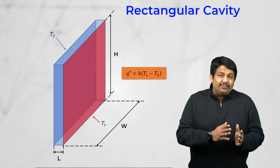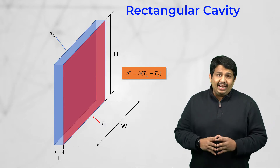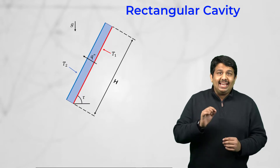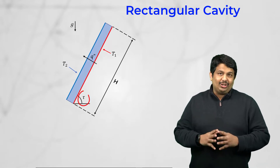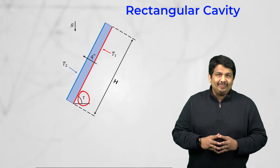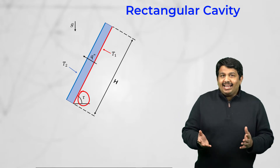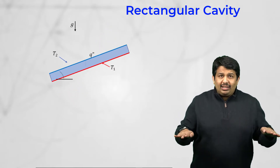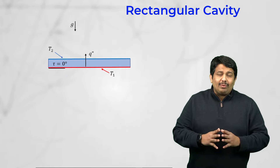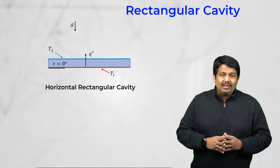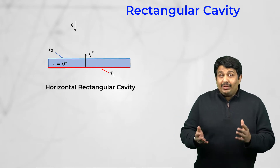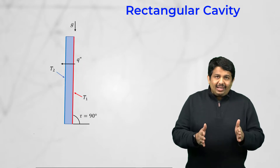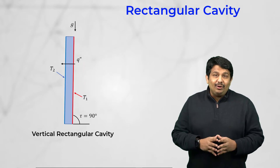When the cavity is viewed from the side, the height of the cavity H is at a tilt angle with the horizontal plane. When this tilt angle is zero, the cavity is horizontal and the bottom wall is heated. When tau is 90 degrees, the cavity is vertical with the side wall heated.